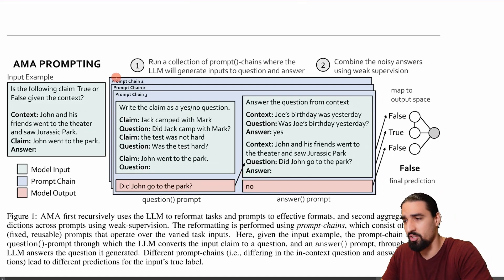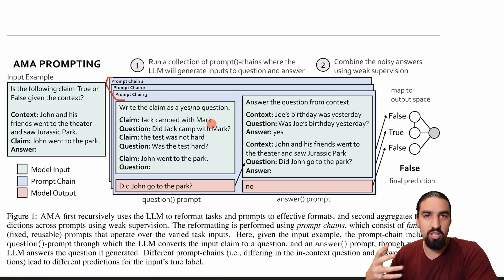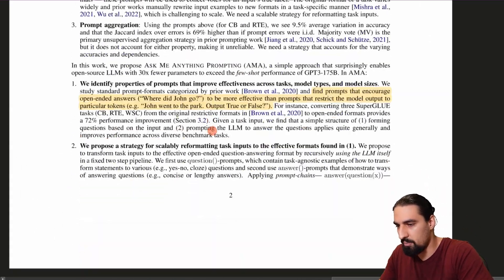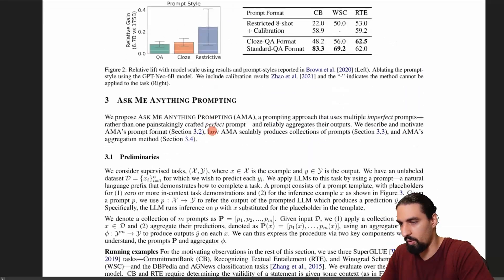So here is the alternative approach that they suggest here. So the idea is to have multiple of these chains, you can see here, they have three chains in this particular image. And each of these chains are going to have slight variations in the ways how they form these claims and questions, etc. And I can show you that immediately, basically, let me show you what the idea is.